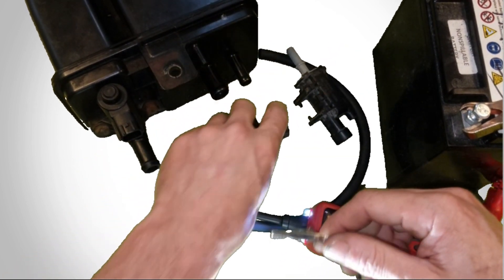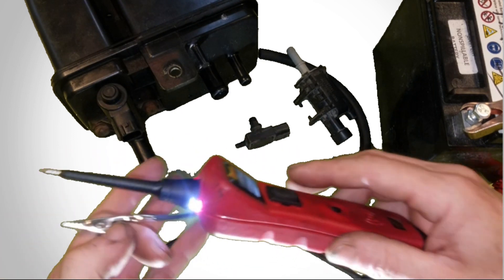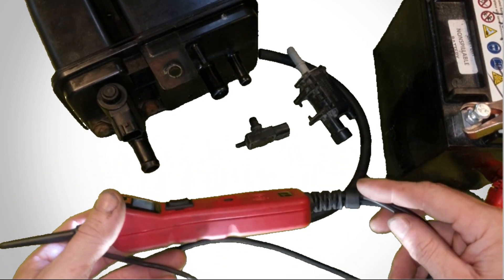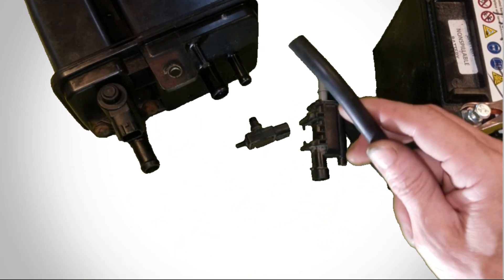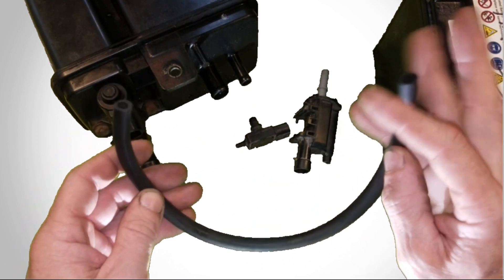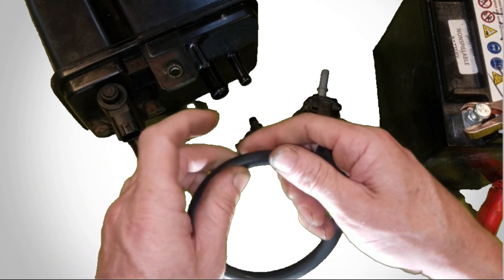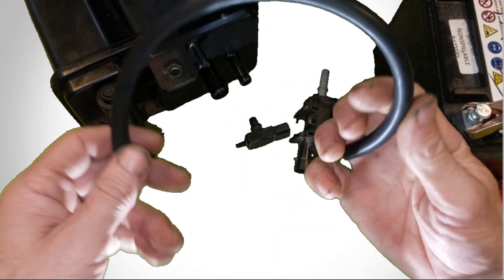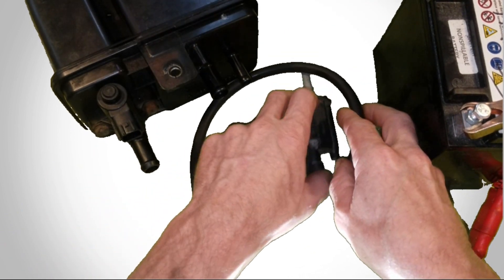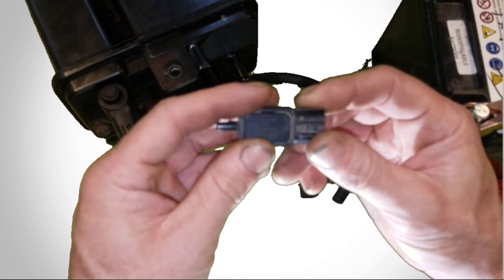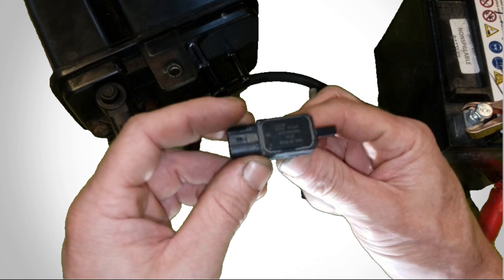So if you test both those and either one of those, if both those test good, chances are you have some kind of rubber line that's leaking or possibly even a steel line that could be rusted out. And if none of that is the case, the last thing and the most unlikely cause is going to be the fuel tank pressure sensor.